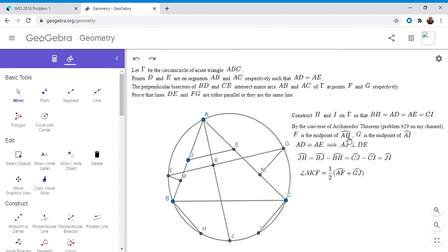We have angle AKF is half of arc AF plus arc GJ, because those are the two intercepted arcs. Now from Archimedes theorem, F was the midpoint of arc AH, so arc AF has to equal arc FH. So we can replace arc AF with arc FH. We have half of arc FH plus arc GJ, but we can split arc GJ up into arc GI and IJ. I'm kind of doing this because I want to use the fact that arc GI is equal to arc JH.